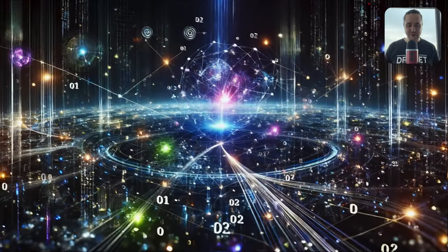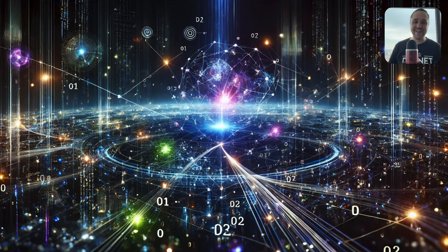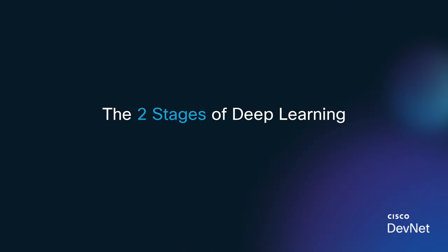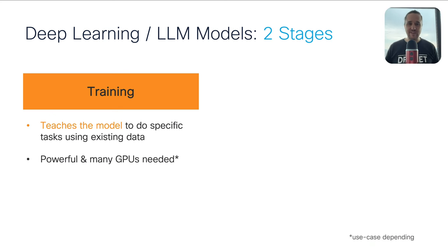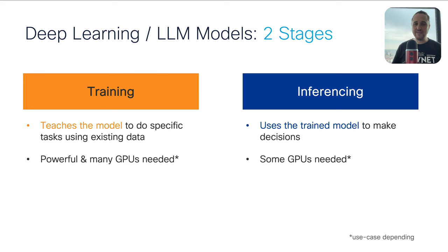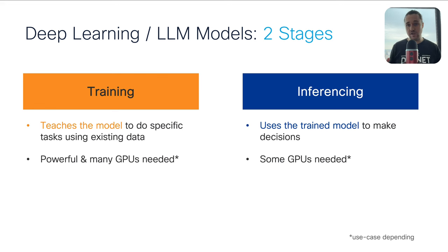I asked ChatGPT to create a picture of how it looks inside of an LLM. Today I'd like to showcase how an LLM works. When it comes to deep learning or LLM models, there are two phases. First is the training phase, where the model is taught a specific task using existing data — this requires powerful, many GPUs. On the other hand, we have inferencing, which means using the already trained model to make decisions, requiring far less computation.